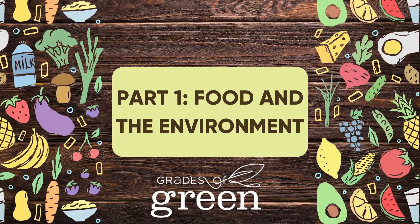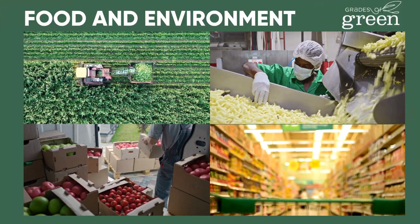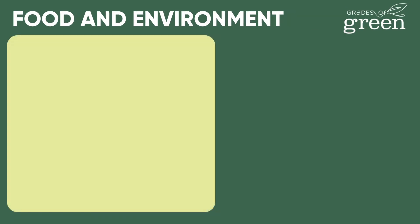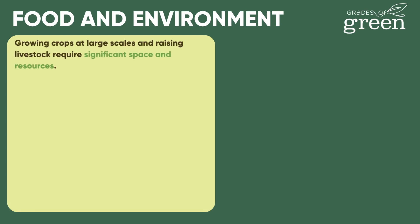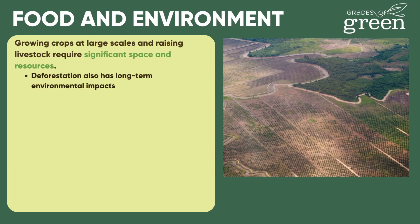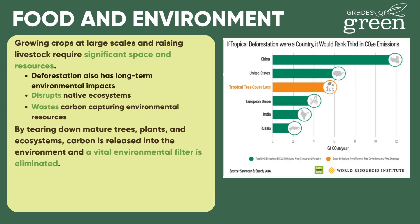Part 1: Food and the Environment. Everything about food, from how it's made to how it's transported, and ultimately what the food is itself, has an impact on the environment. Food requires significant resources to produce. Growing crops at large scales and raising livestock requires significant space and resources. Creating the space requires deforestation, which disrupts native ecosystems and wastes environmental resources that are key to mitigating climate change itself through the power of carbon capture. By tearing down these mature trees, plants, and ecosystems, carbon is released into the environment, and a vital environmental filter is eliminated.